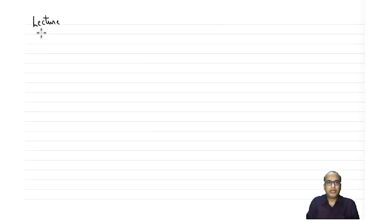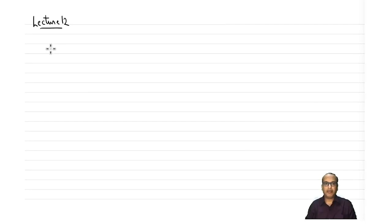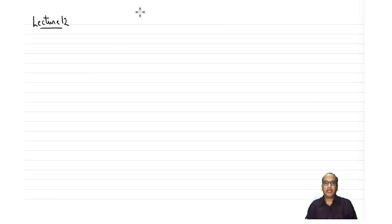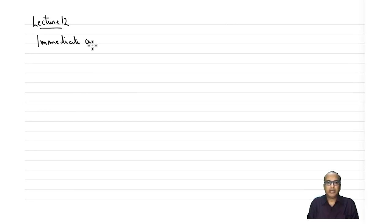Welcome back everyone. Let us start lecture 12. So far we have discussed symmetry present in molecules and learned how to classify molecules based on symmetry elements and symmetry operations into various symmetry point groups. By now we should be well versed with all the symmetry point groups and how to classify a molecule into different ones. Once we have achieved that, we are ready to go for the very first application of symmetry point groups.